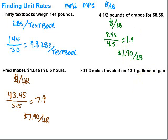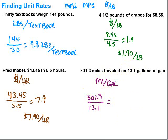Last one. We've got miles and gallons of gas used to travel that distance. What do we want to find — miles per gallon, or gallons per mile? Hopefully you're not using gallons per mile; if so, maybe you want to get a more fuel-efficient vehicle. Miles per gallon sounds good. So 301.3 miles divided by the number of gallons — 13.1. Do the division: 301.3 divided by 13.1 gives me 23. What's my label? Miles per gallon. So, 23 miles per gallon.